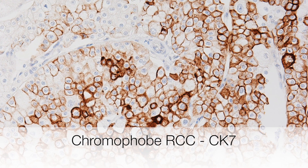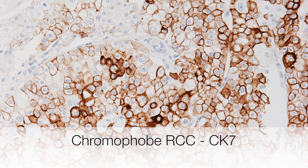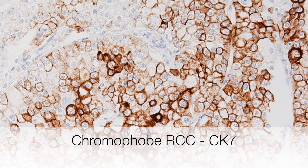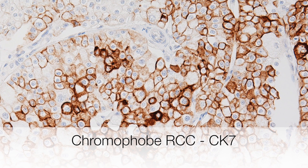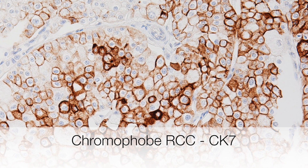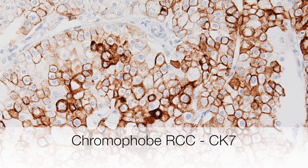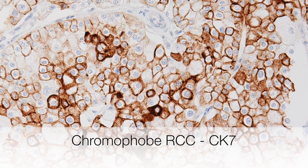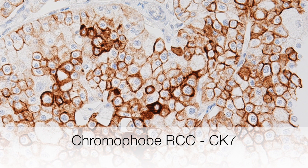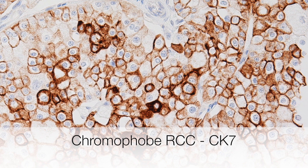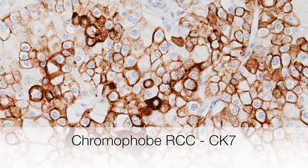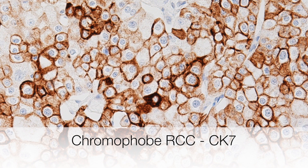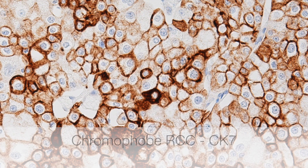In contrast, in a chromophobe renal cell carcinoma, the vast majority of tumour cells show strong positive staining with CK7. This makes CK7 a very useful stain to distinguish between chromophobe RCC and oncocytoma.